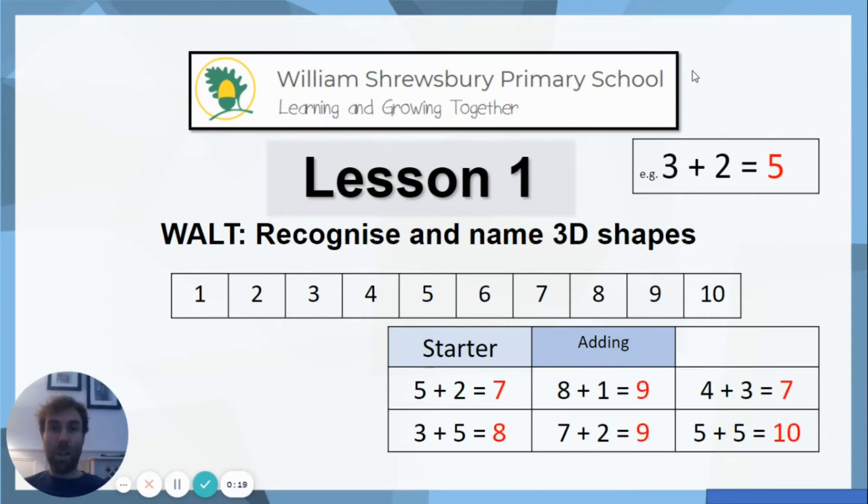So hopefully you've had a go at those. Let's go through the answers. Give them a tick if you've got them right. If you haven't, have another look to see where you might have gone wrong. 5 plus 2 equals 7. 8 plus 1 equals 9. 4 plus 3 equals 7. 3 plus 5 equals 8. 7 plus 2 equals 9. And 5 plus 5 equals 10. Hopefully they're all right. If you've only got one wrong, you might be able to spot your mistake. If you've got lots wrong, let your mom and dad know and they'll have a little practice with you.